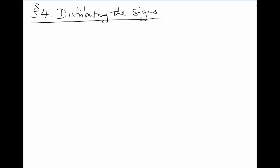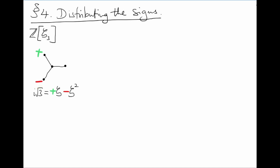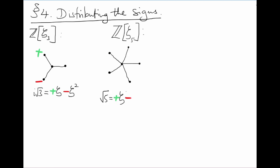Distributing the signs. Looking at Z adjoin zeta₃, we found i times root 3 equals plus zeta minus zeta squared — a plus sign and a minus sign. In order to end up on the imaginary axis, all the real parts in our sum will have to cancel out, so giving these conjugate roots of unity opposite signs is a good plan. For zeta₅, we found root 5 equals plus zeta minus zeta squared minus zeta cubed plus zeta to the 4. In this case, we ended up on the real axis, so we gave conjugate roots of unity the same sign, so as to cancel out the imaginary parts.